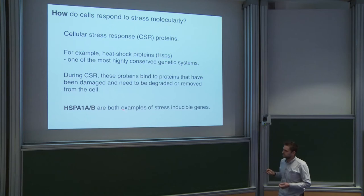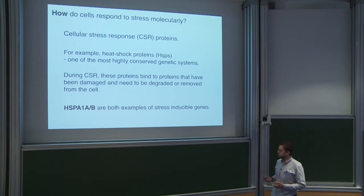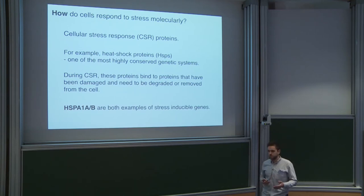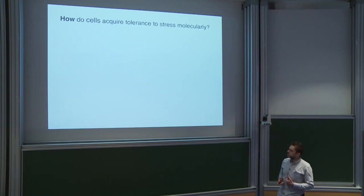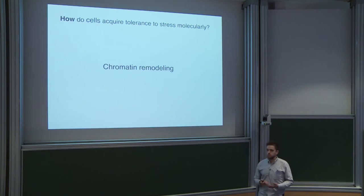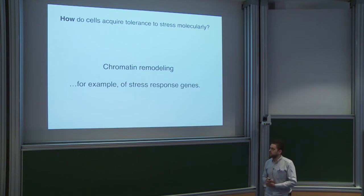I'll be talking particularly about HSPA1A and B, which are stress-inducible. Not all HSPs are stress-inducible, but these two are stress-inducible by different kinds of stresses — I'll focus on heat. So how do cells acquire tolerance to stress molecularly? One way may be through chromatin remodeling of the stress response genes.